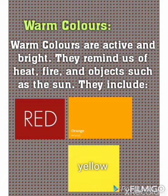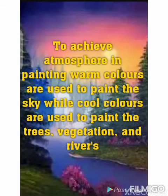Warm colors are used to paint things like fire or sunlight, and they include red, yellow, and orange. So to use cool and warm colors to achieve atmosphere: objects such as the sun and the sky are usually painted in warm colors such as fiery red, yellow, or orange, while cool colors are used to paint objects such as vegetation, trees, grasses, rivers, or lakes — usually represented in green, blue, or purple.